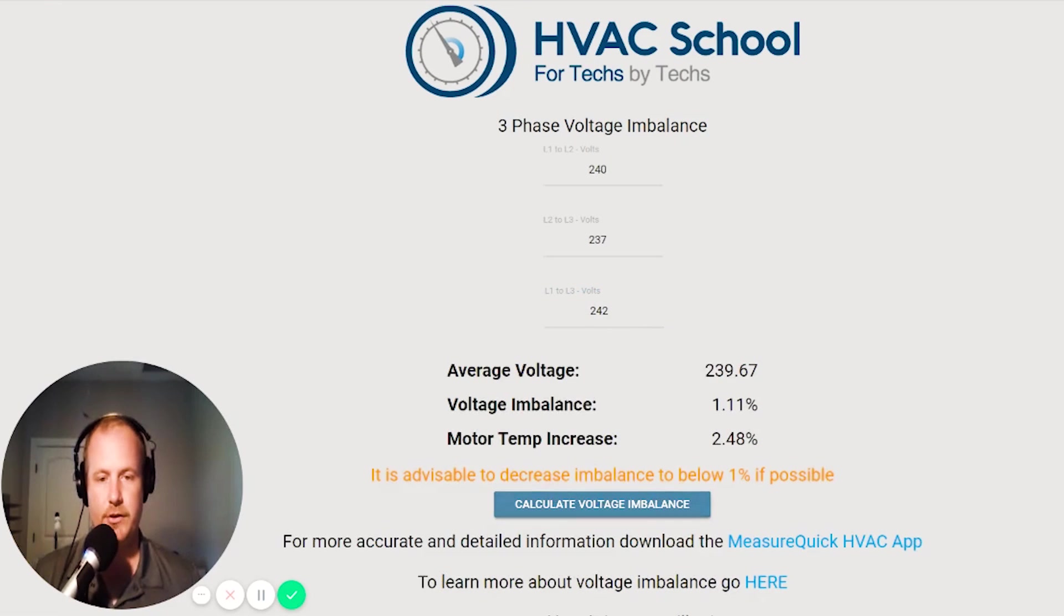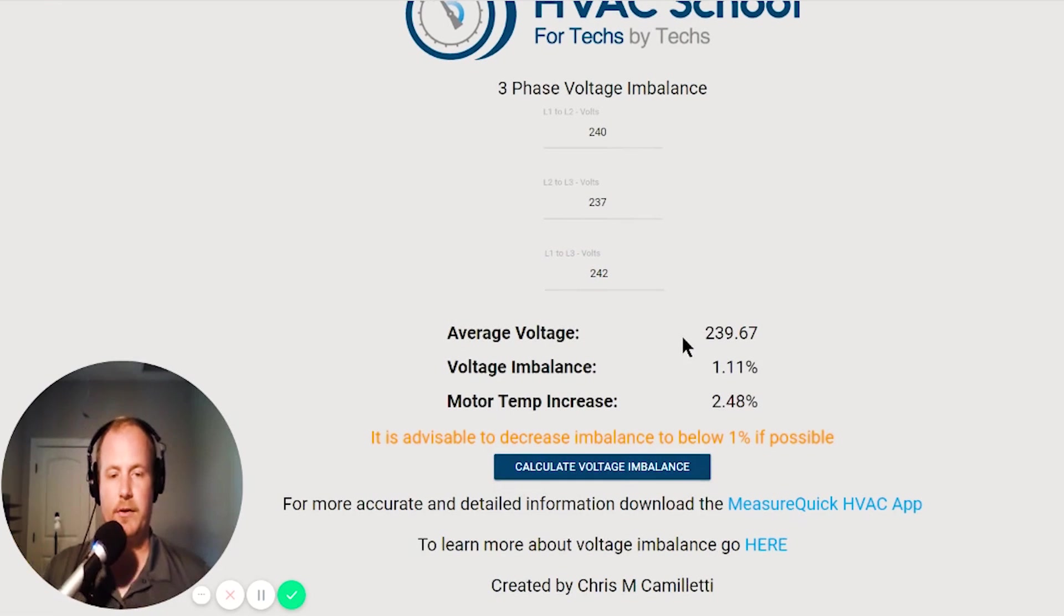Once you get them all entered, you calculate voltage imbalance and it's going to tell you whether or not you are in the acceptable range. Our voltage imbalance here is 1.11%, which is going to result in a 2.48% motor temperature increase, which is kind of a cool little thing we added in there.